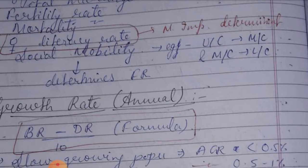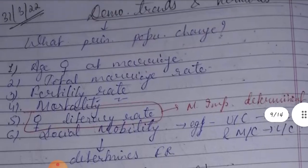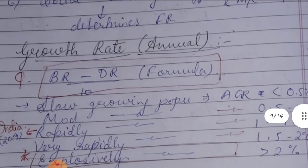Social mobility covers upper class, middle class, and lower class. Economic crisis affects social mobility, which in turn influences fertility rate. Female literacy rate is also a key factor in population change.